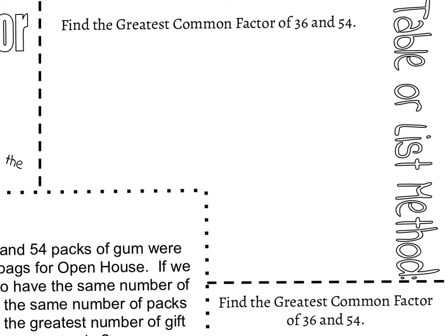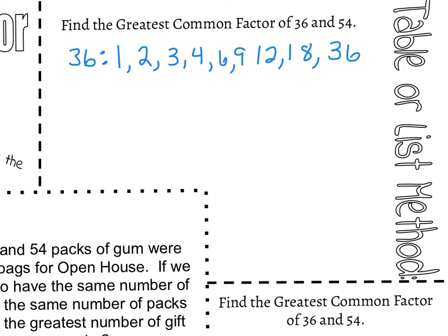A lot of times what I would do is look at 36 and start with 1 times 36 and look through my factor pairs. Using my multiplication table: 2 times 18 is 36, 3 times 12 is 36, 4 times 9 is 36, and our last one is 6 times 6 is 36. That would be all of our factors of 36. Now I'm going to repeat that process with 54. You might be thinking: how am I supposed to know all of these different factors? That is where we run into a problem — if you don't know all the factors, it's super easy to miss some of them.